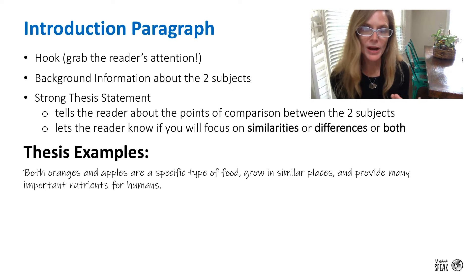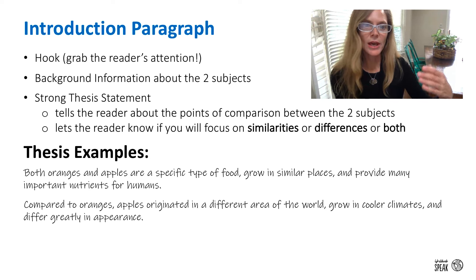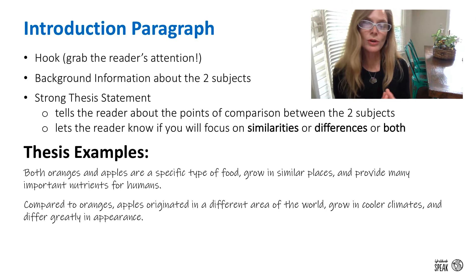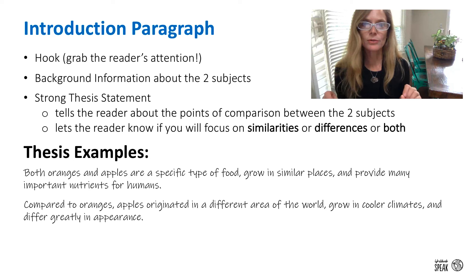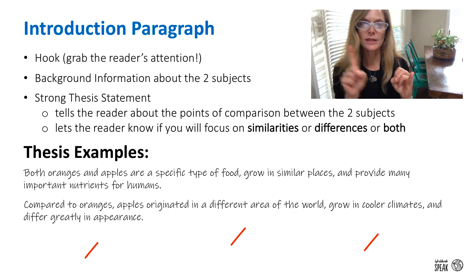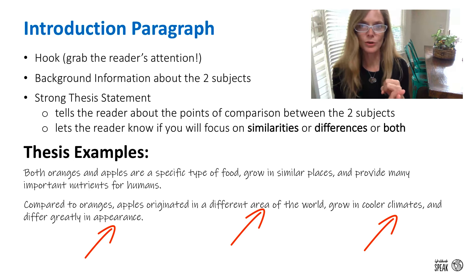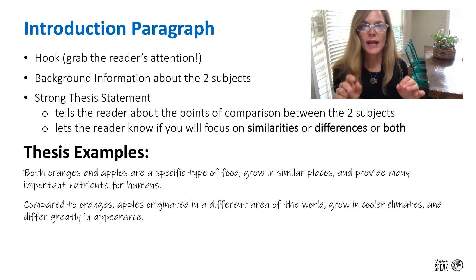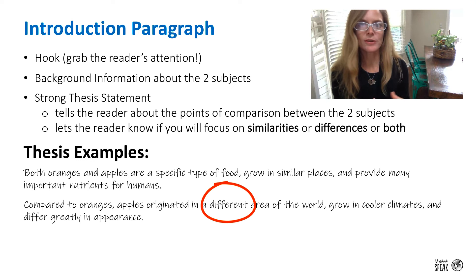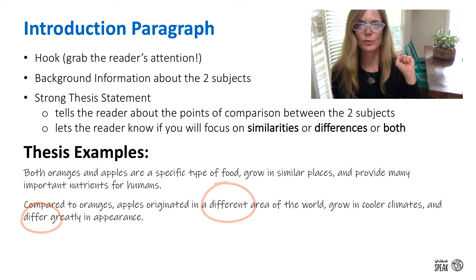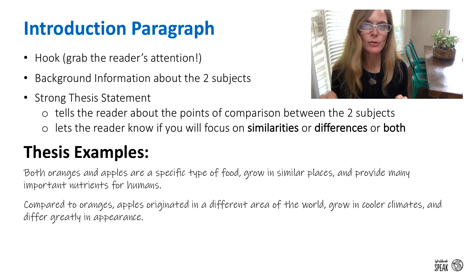Now let's say we wanted to talk about differences. Our thesis would look something like this: 'Compared to oranges, apples originated in a different area of the world, grow in cooler climates, and differ greatly in appearance.' I've let the reader know the three points of comparison — different area of origin, cooler climates, and differing appearance — and the reader knows I'm focusing on differences. I've used the words 'different area of the world' and 'differ greatly' to signal that, so our thesis is very focused with correct language to show differences.